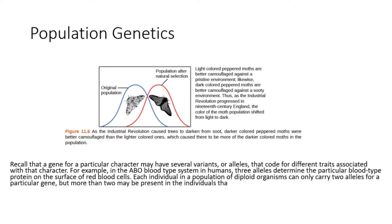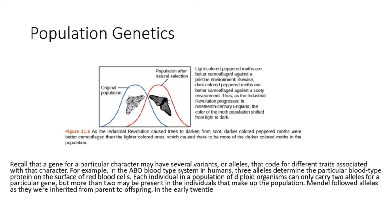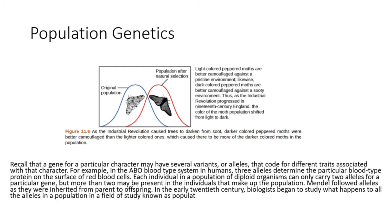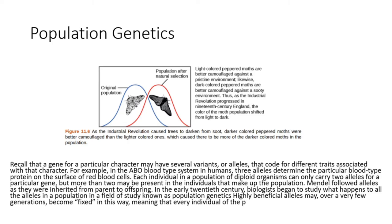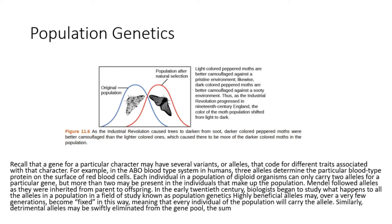Mendel followed alleles as they were inherited from parent to offspring. In the early 20th century, biologists began to study what happens to all the alleles in a population, in a field of study known as population genetics. Highly beneficial alleles may, over very few generations, become fixed — meaning that every individual of the population will carry the allele. Similarly, detrimental alleles may be swiftly eliminated from the gene pool.